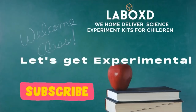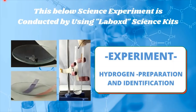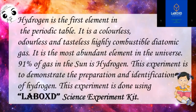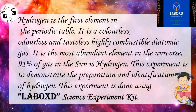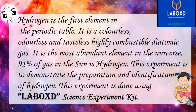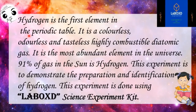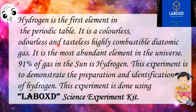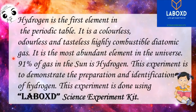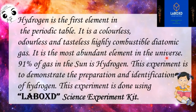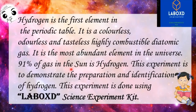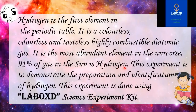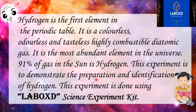Hello everyone, welcome to informative educational science experiments. In this experiment, we will demonstrate the preparation and identification of hydrogen gas. Hydrogen is the first element in the periodic table. It is a colorless, odorless, and tasteless, highly combustible diatomic gas. It is the most abundant element in the universe — 91% of gas in the Sun is hydrogen.